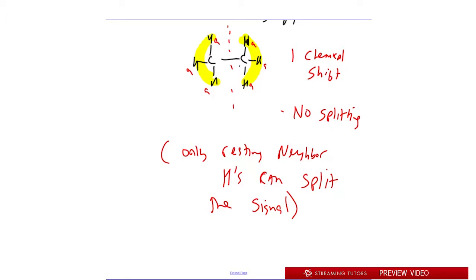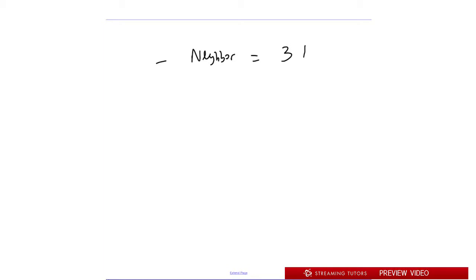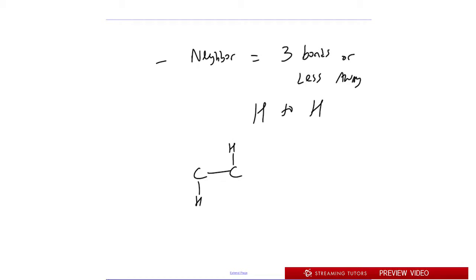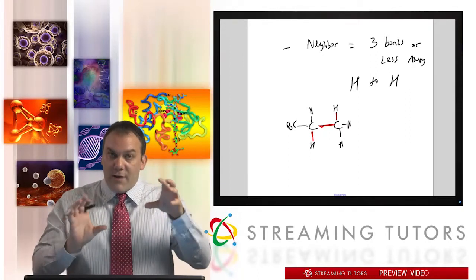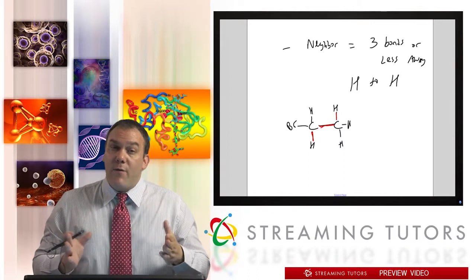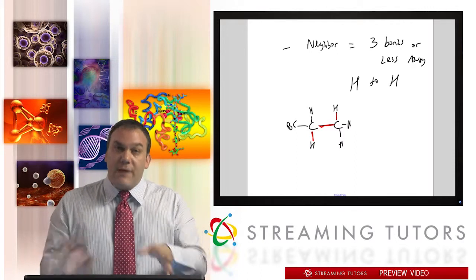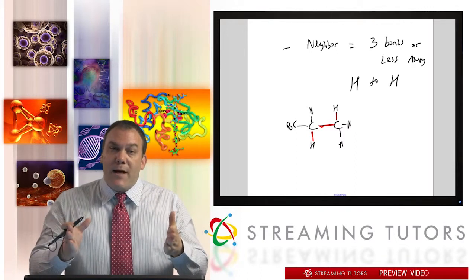The second key point is what 'neighbor' means. A neighbor is defined as an H that is three bonds or less away, H-to-H. For example, two H's separated by three bonds can interfere with each other's message — they are said to couple. If H's are more than three bonds away, that's called long-range splitting and doesn't happen under standard conditions. So we only concern ourselves with H's that are three bonds or fewer away.